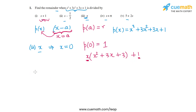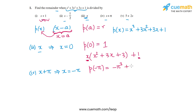In the fourth part, the divisor polynomial is (x + π), which has a zero of x = -π. So we find p(-π) = (-π)³ + 3(π)² + 3(-π) + 1 = -π³ + 3π² - 3π + 1. This cannot be simplified any further, so this is the remainder when p(x) is divided by (x + π).